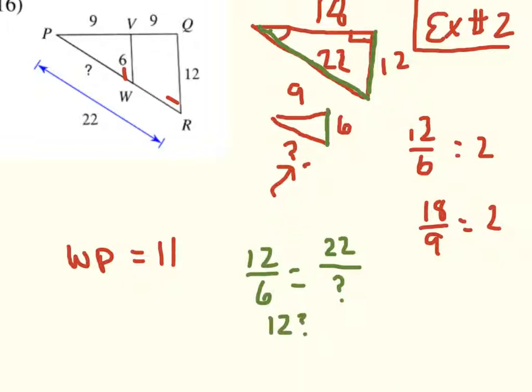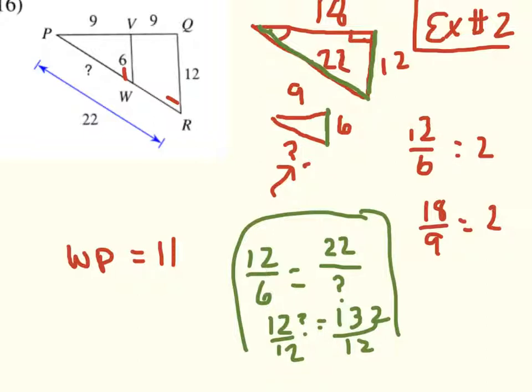12 times question mark equals 6 times 22. So either knowing what that is or using my calculator, I come up with an answer of 132. And then I divide both sides by 12. And you're still going to find out that the question mark is going to be 11, whether you do it with a proportion or whether you kind of think it through because this one's relatively easy.